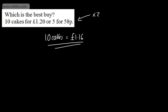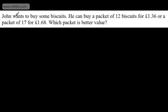So this question says John wants to buy some biscuits. He can buy a packet of 12 biscuits for £1.36 or a packet of 17 for £1.68. Which packet is better value? Often in supermarkets now they tell you the price per 100g or the price per biscuit. What we're going to do is look at something called unitary measures. What I want to find out is what each biscuit would cost if I bought the 12 or if I bought the 17. And we can do that by taking price and dividing it by quantity. So price divided by quantity.